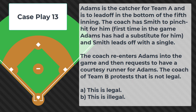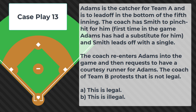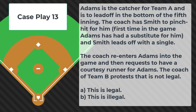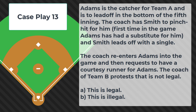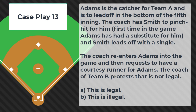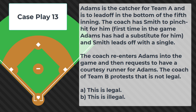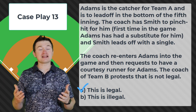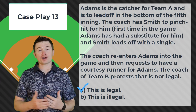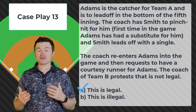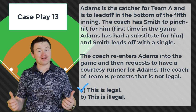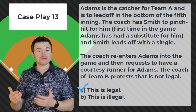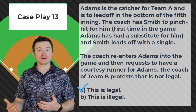Case play number thirteen: Adams is the catcher for team A and leads off in the bottom of the fifth. The coach sends Smith to pinch hit — the first time Adams has had a substitute. Smith singles. The coach then re-enters Adams and requests a courtesy runner for Adams. The coach of team B protests this is not legal. The correct answer is this is legal. Since Smith is not the catcher of record, a courtesy runner can't be used for Smith. But Adams was the catcher in the last half inning, so Adams is the catcher of record and can have a courtesy runner.